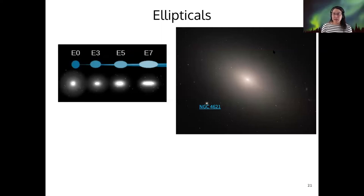All right, our next category is the ellipticals. So here's an example of an elliptical galaxy, NGC 4621. You might notice it's just a lot more boring than spiral galaxies, right? It's basically just a fuzzy collection of lots of stars.